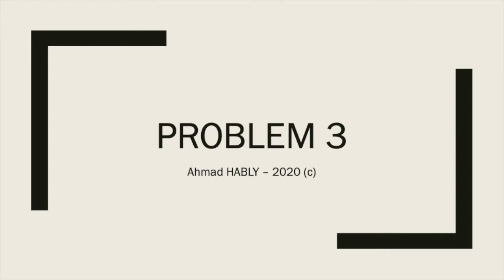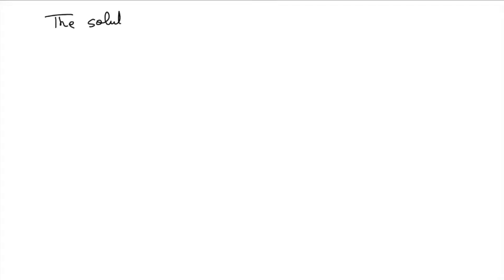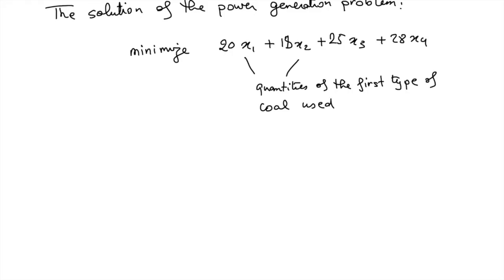For problem 3, which is about a power generation example, the solution of this problem is to minimize this cost function depending on X1, X2, X3, and X4. X1 and X2 are the quantities of the first type of coal used in both stations in tons.